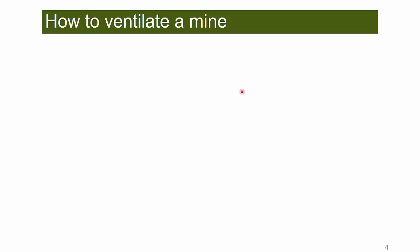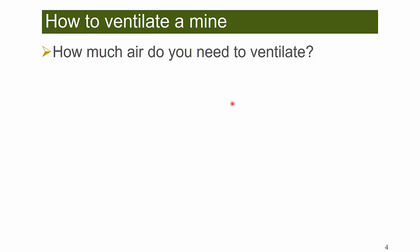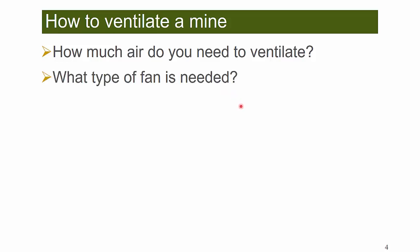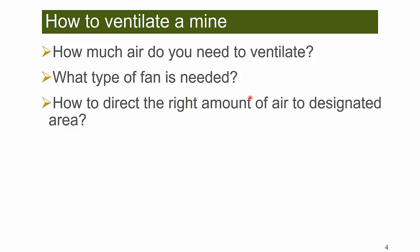The last part is how to ventilate a mine. First, we need to know how much air is required, which is based on the different operations and the number of miners underground, as well as gas and dust limits. Second, we need to select a suitable fan, as there are many different kinds available. Third, we need to direct the right amount of air to designated areas, since air quantity requirements differ by location.